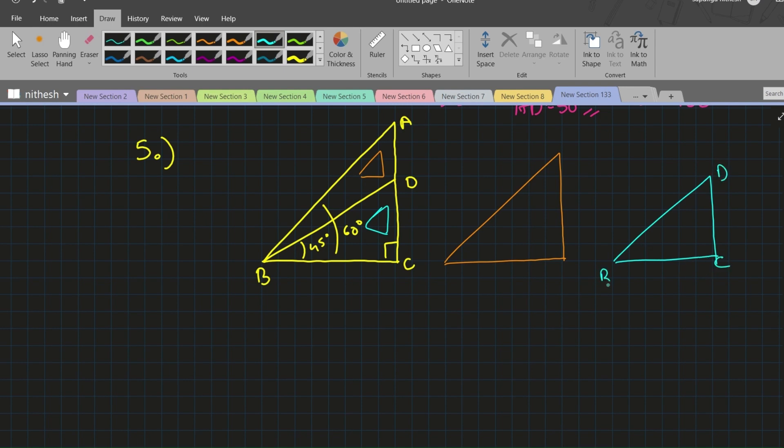This is triangle DCB and ACB. B has the angle 60 degrees, whereas in this triangle it has 45 degrees.